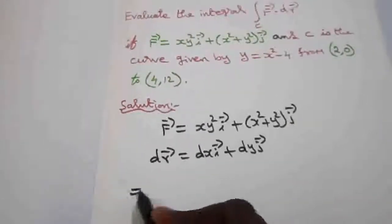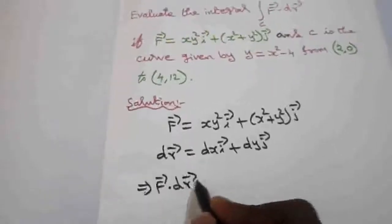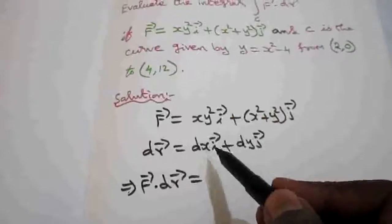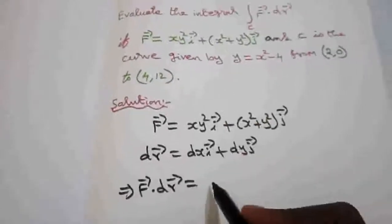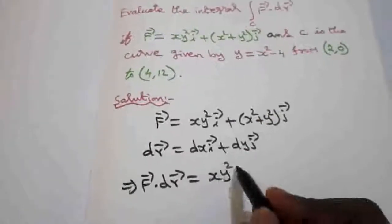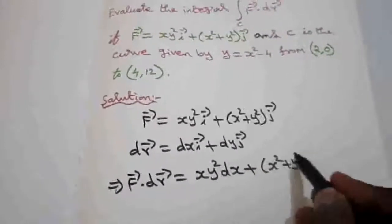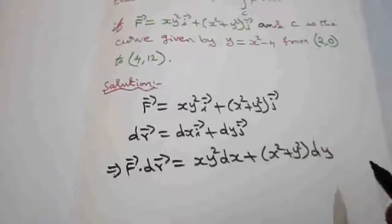So I want f dot dr. F dot dr means taking the dot product between these two. i coefficient is multiplied with i coefficient, and i dot i is 1. So this becomes xy²dx + (x² + y²)dy. So this is f dot dr.